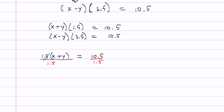So that cancels out, and what we're left with is this equation. On the left side we have just x plus y. On the right side we have 10.5 divided by 1.5, which is equal to 7. So the first equation is going to be just that.